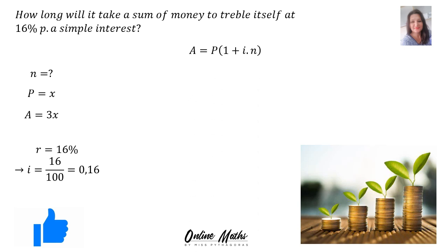Now we can do the sum. It's simple interest, so we use the formula A = P(1 + i × n). Substituting: 3x = x(1 + 0.16n). In the next step, I divided both sides by x, so the x cancels on both sides. Therefore I'm left with 3 = 1 + 0.16n.